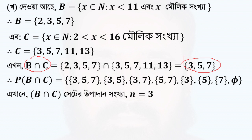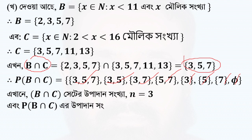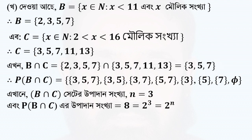The B-intersection C-A-S-3 is equal to 1, 2, 3, 4, 5, 6, 8. So the B-intersection C-A-S-3 is equal to 2, 3. So the B-intersection C-A-S-3 is equal to 3.